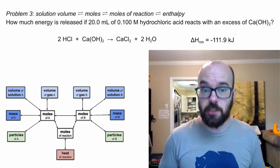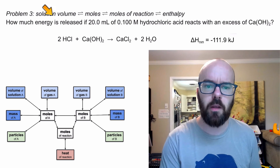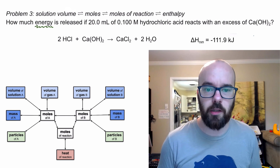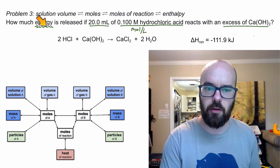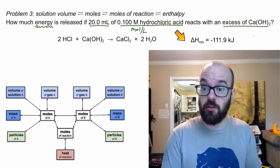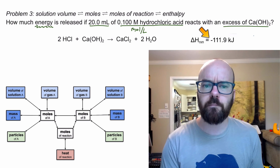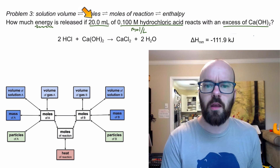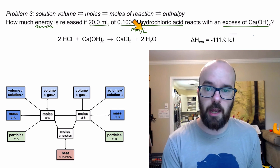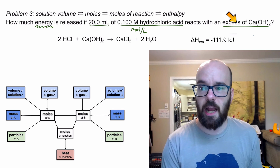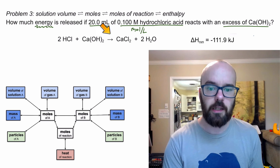The third problem incorporates enthalpy stoichiometry as well as solution stoichiometry. How much energy is released if 20 milliliters of 0.1 molar hydrochloric acid reacts with an excess of calcium hydroxide? The enthalpy is negative, meaning it's exothermic — energy is being released. My starting data point is 20 milliliters; 0.1 molar is a conversion factor. The excess calcium hydroxide won't limit the reaction — it will be limited by HCl.